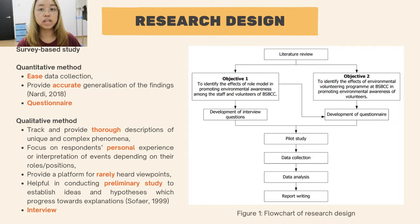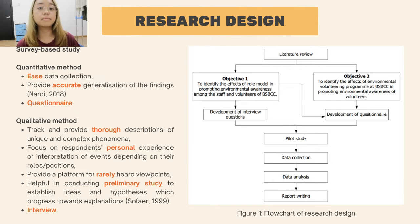Figure 1 shows the flowchart of research design. First, a literature review will be done, which leads to objectives 1 and 2. Objective 1 involves the development of interview questions and also a questionnaire, while objective 2 involves the development of a questionnaire. After the interview questions and questionnaire are developed, a pilot study will be done, followed by data collection, data analysis, and lastly report writing.